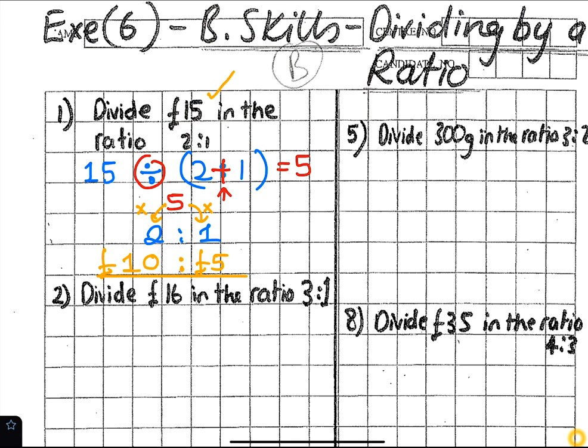So if you divide £15 in the ratio of 2 to 1 between you and your little sister, because you're bigger you get two proportions, how much money would you get? And how much did she get? Fantastic. Okay, question number 5, Hafsa.